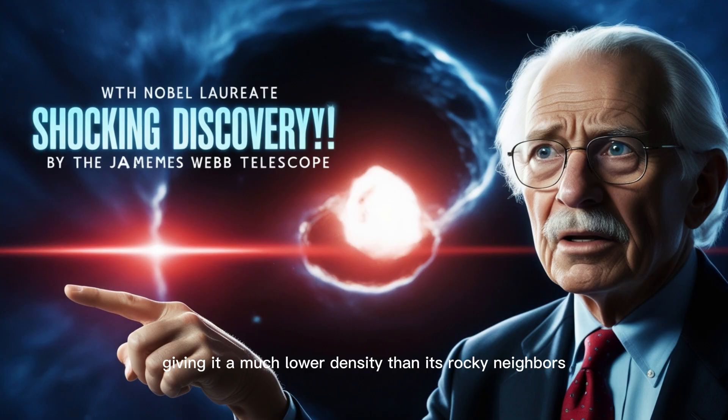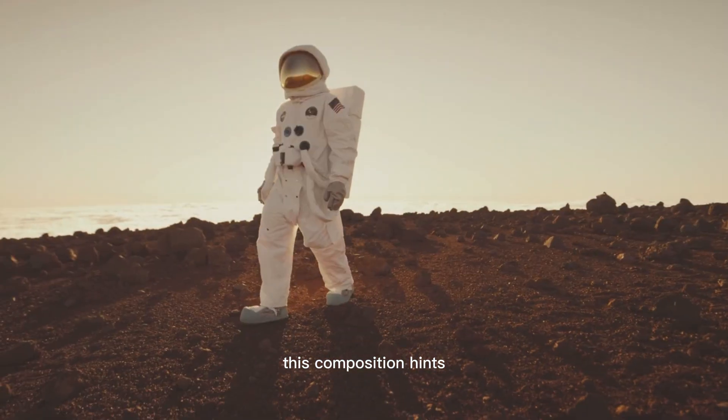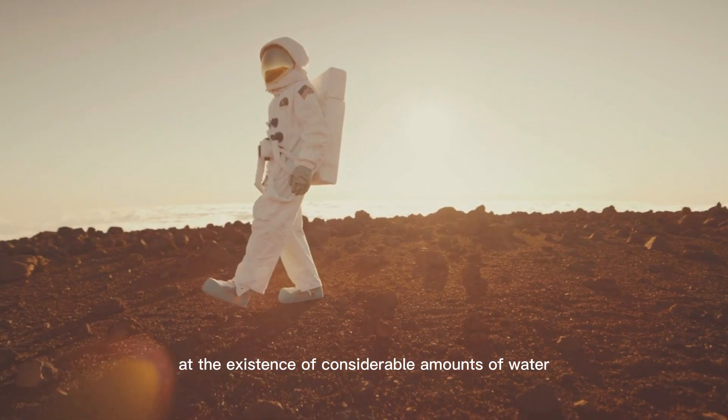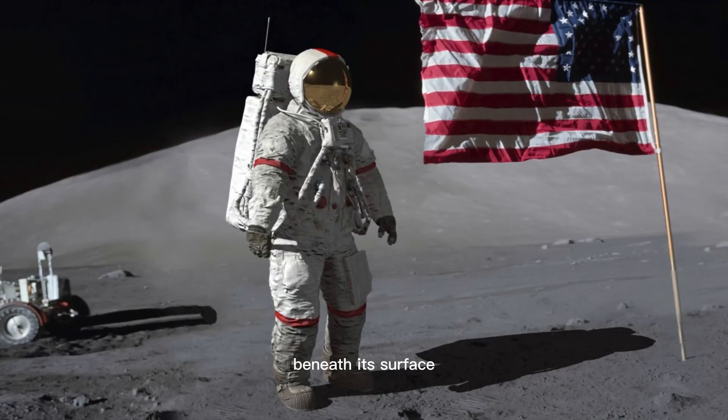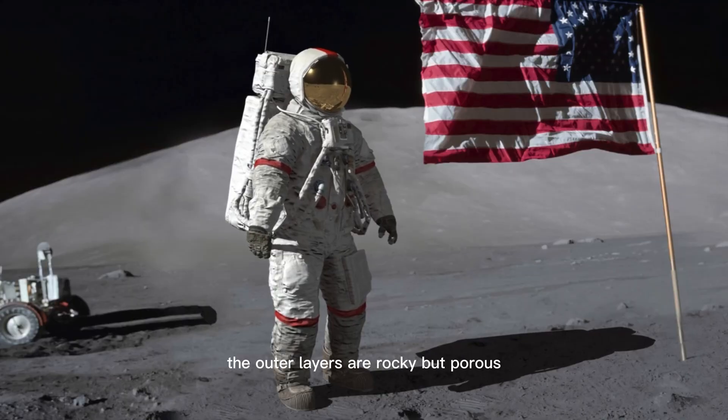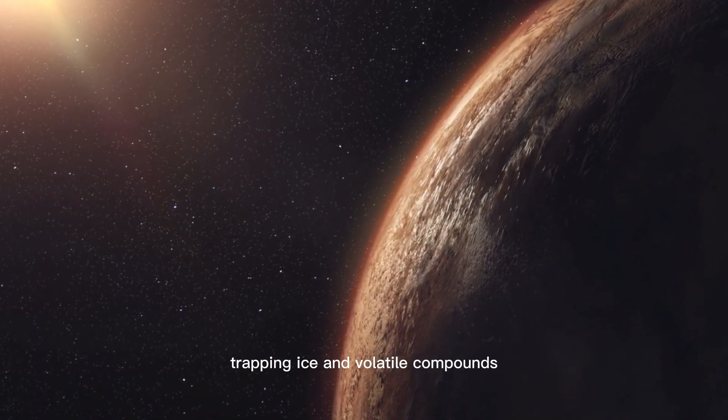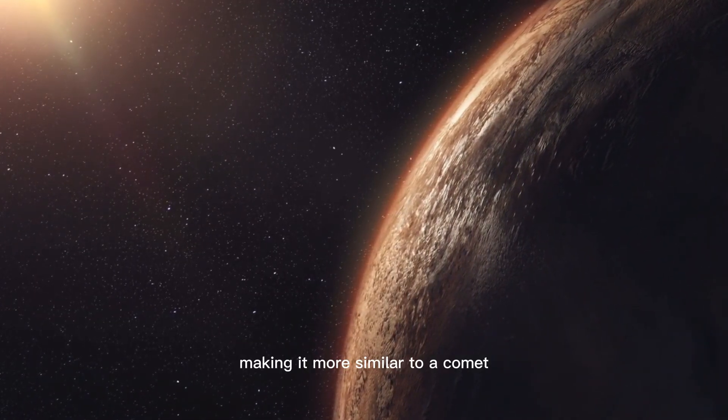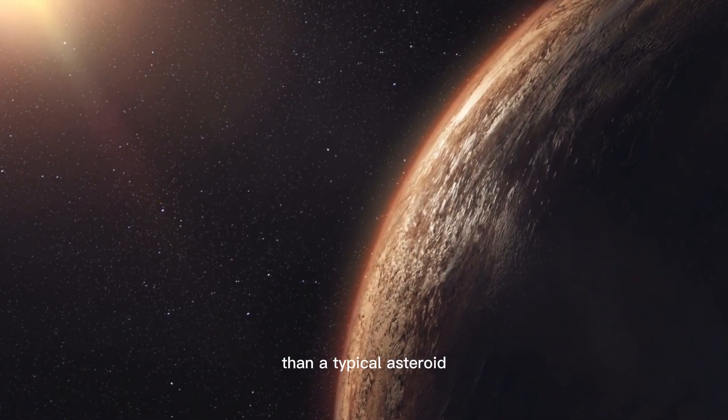This composition hints at the existence of considerable amounts of water beneath its surface. The outer layers are rocky but porous, trapping ice and volatile compounds, making it more similar to a comet than a typical asteroid.